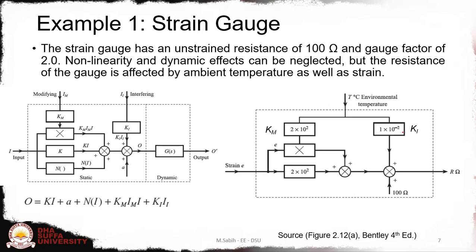Assume that the values have been detected and KI is 10 raised to minus 2, and KM is a large quantity as mentioned in the source file Figure 2.12a in Bentley. So we keep it here to 10 raised to power 2. This makes the whole block diagram—the complete generalized model of a strain gauge. This 100 ohm is added as the unstrained resistance here to complete the model, and finally we will have this equation: R equals 100 plus 10×10⁻²×T plus 2×10²×ε plus 2×10²×T×ε. This is the mathematical model.